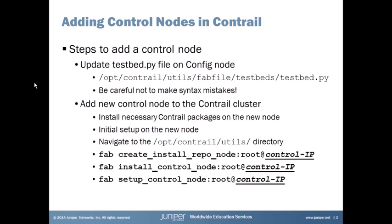On the config node, navigate to the /opt/contrail/utils/ directory, then run these three commands in order. First: fab create_install_repo_node:root@<control_node_IP> — this creates a repository on the new node. Second: fab install_control_node:root@<control_node_IP> — this installs the required packages. Third: fab setup_control_node:root@<control_node_IP> — this sets it up as a control node. Each command runs scripts already present on the config node.